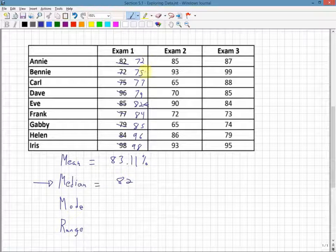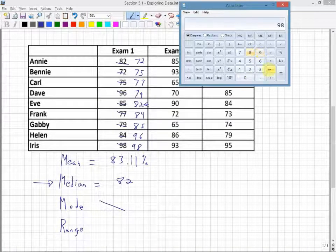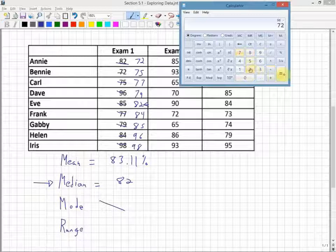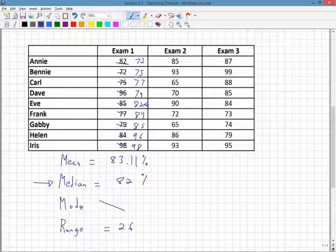Mode - I don't think I have one because I don't have any repeating values. The range, you would take the largest, which is 98, and subtract my smallest, which is 72, and get 26. That's a brief overview of how to find mean, median, mode, and range.